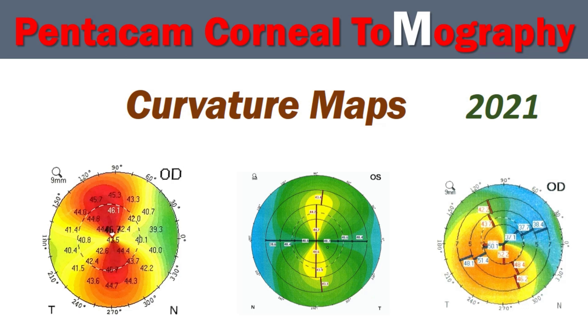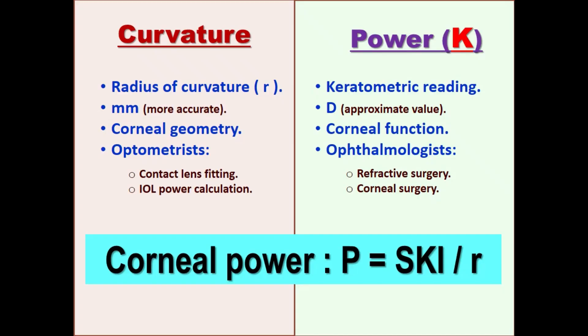Curvature is a measurement of the shape of the cornea and expresses its geometric properties. Radius of curvature in millimeters is more accurate than power in diopters. Therefore, when maximum accuracy is required, for example during IOL power calculation, radius of curvature is used.